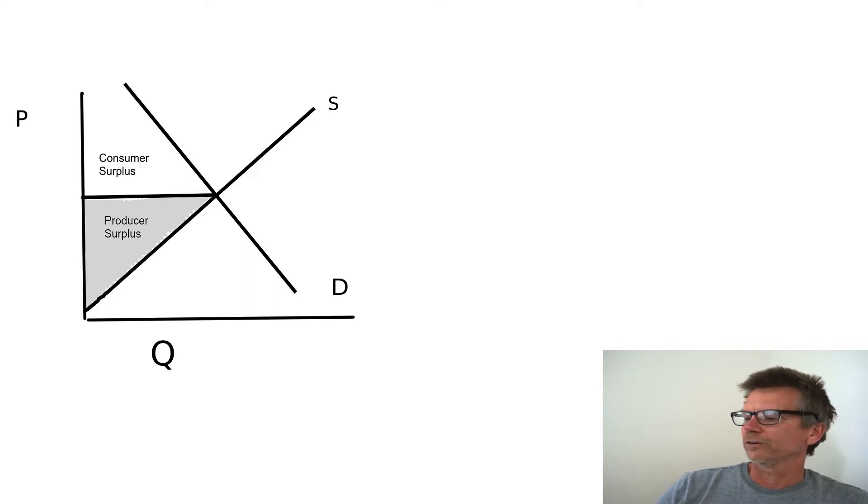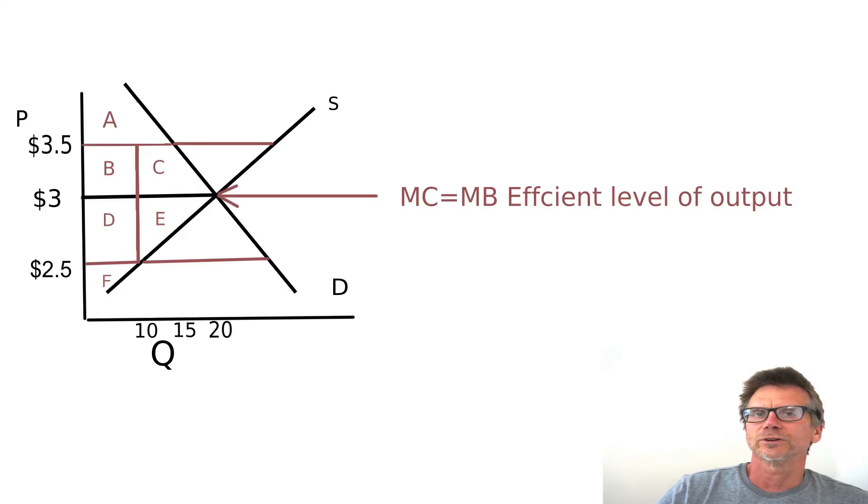So in the first diagram, we need to look at what is consumer surplus and what is producer surplus. Very simple. Consumer on the top, producer on the bottom. You can make some sort of mnemonic to remember that. I see people confuse even these two simple triangles. Consumer on the top, producer on the bottom.